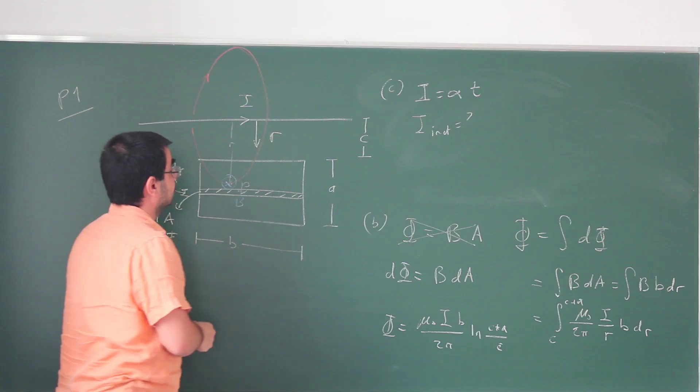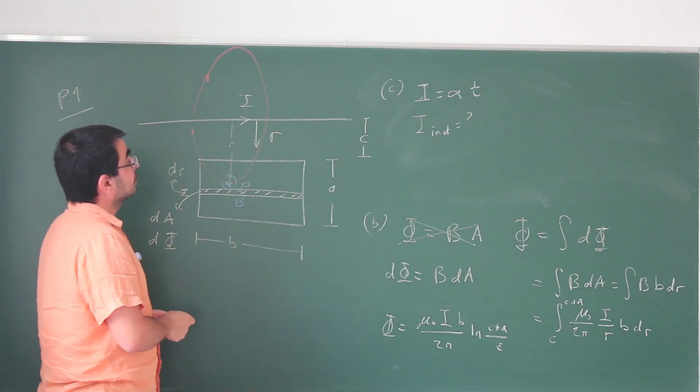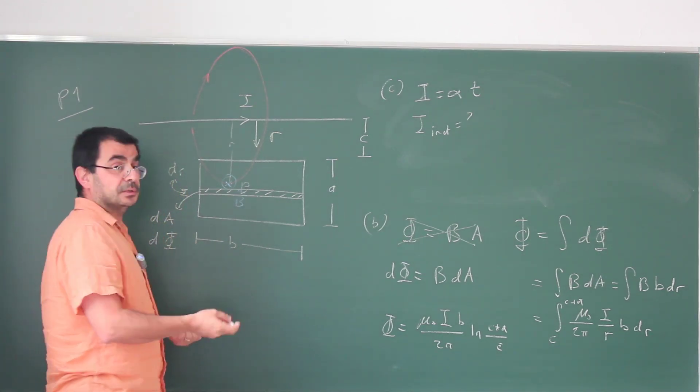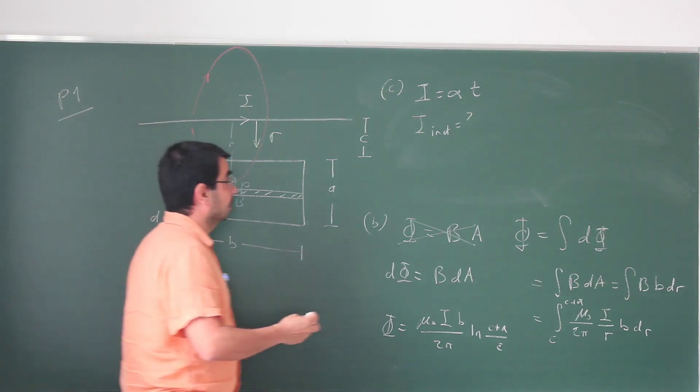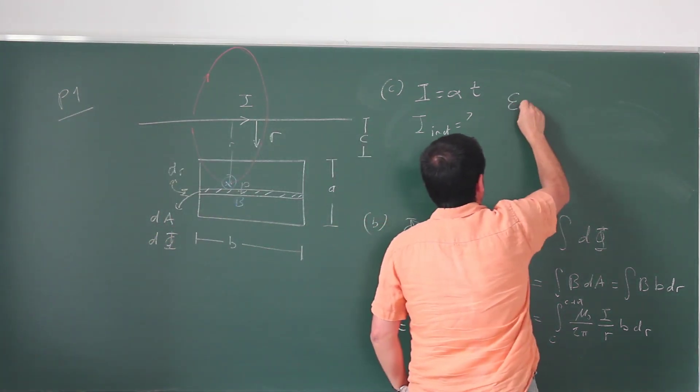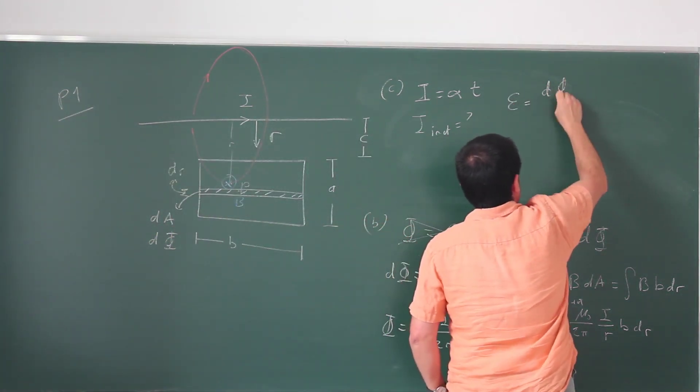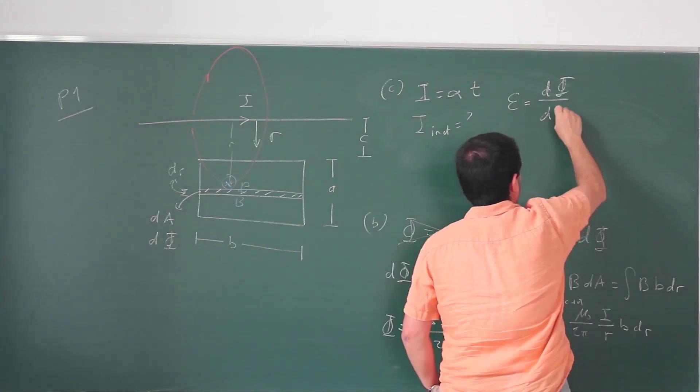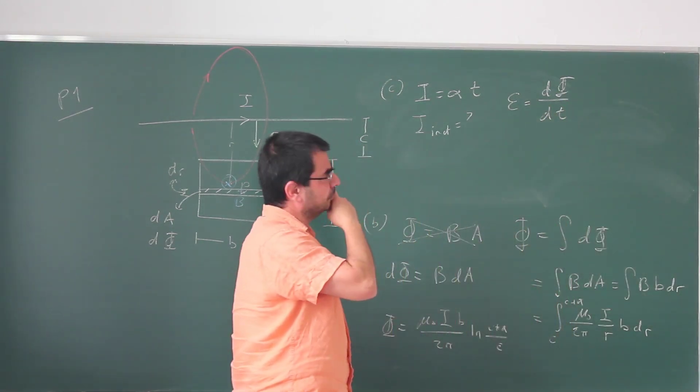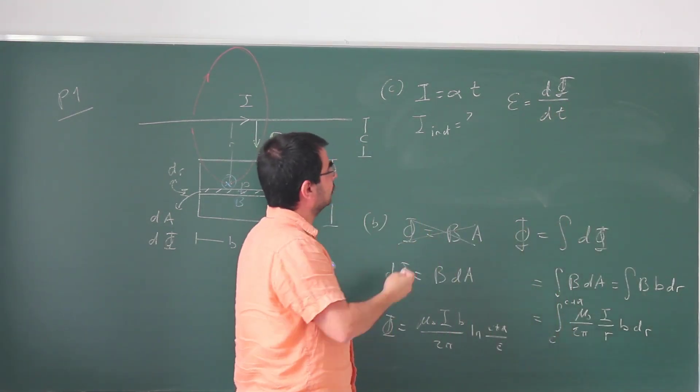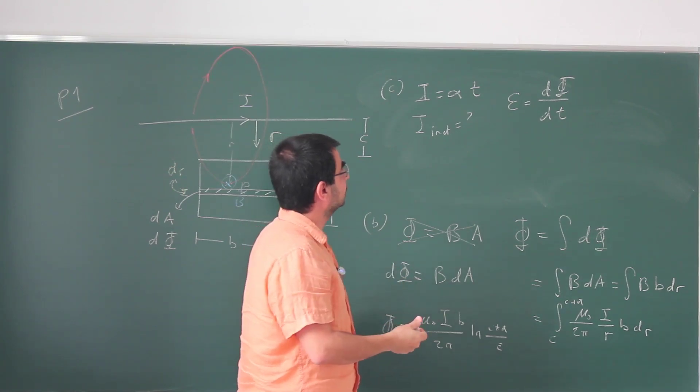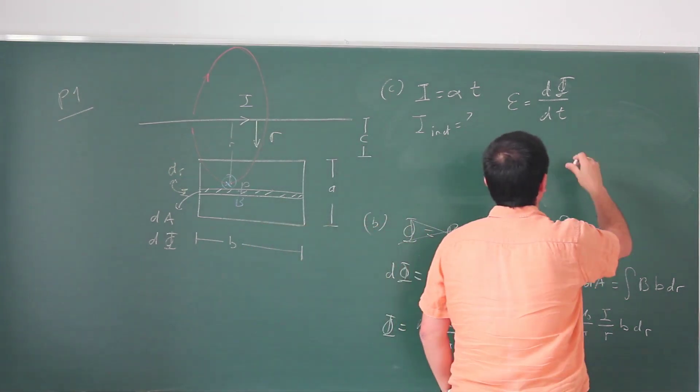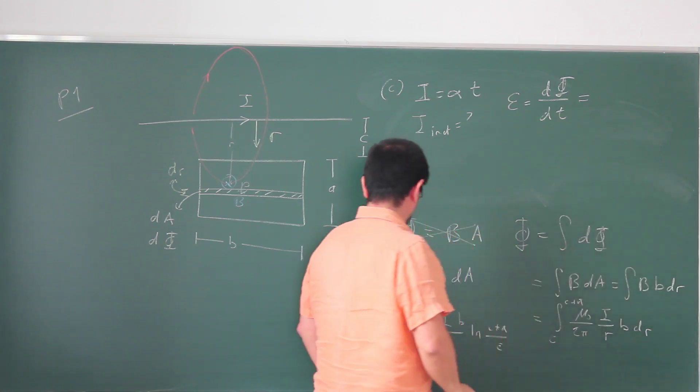The induced current is going to be a result of some EMF. It's going to be a result of some EMF and that EMF by Faraday's law is going to be the rate of change of flux. So EMF is d phi dt. I'm not going to worry about the negative sign. I'm going to determine the direction of the current by hand later, so this is just magnitude of the EMF.